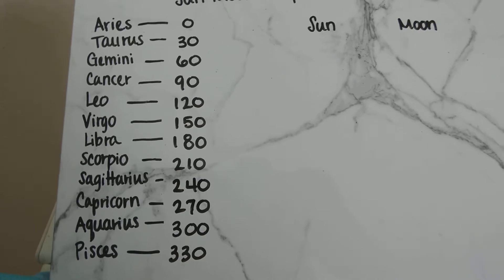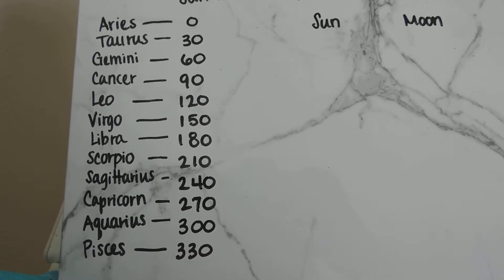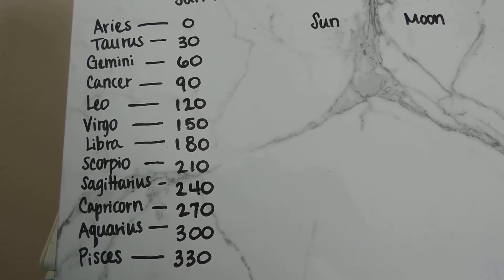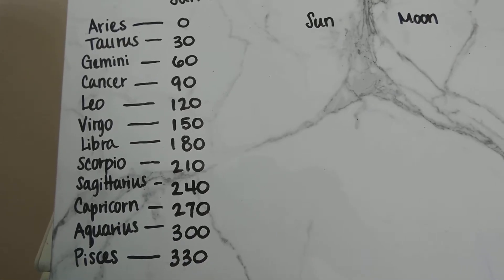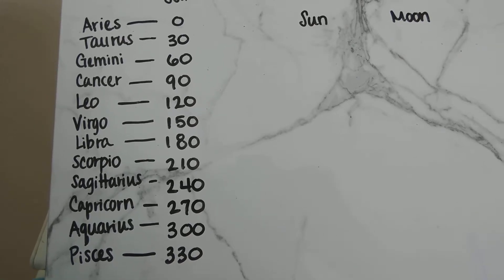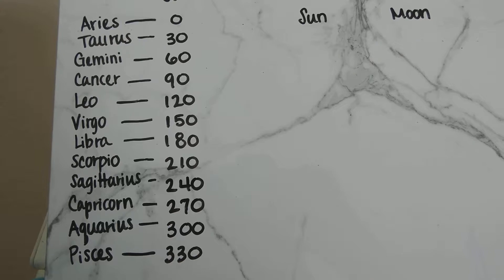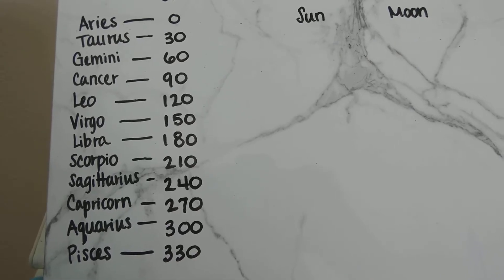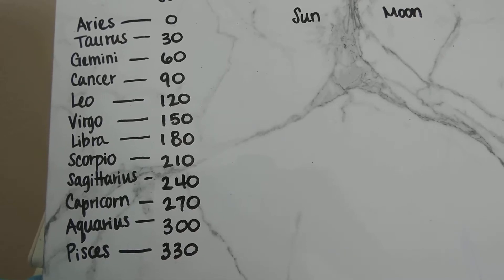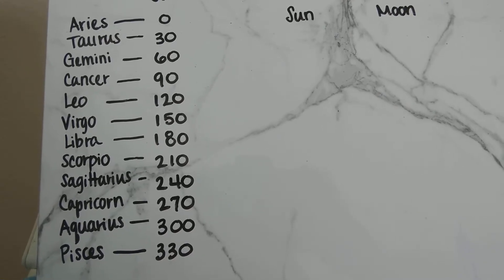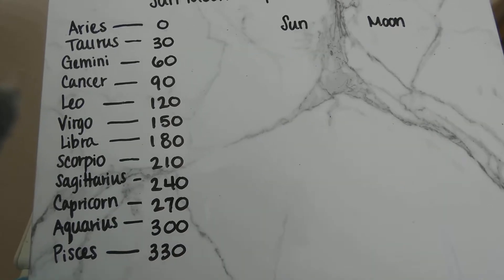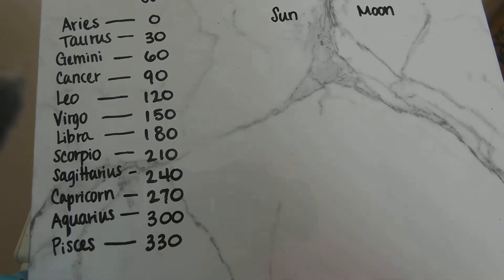First we're going to break the zodiac down into 360 degrees. We'll put down Aries, Taurus, Gemini, Cancer, and then the degrees they start with next to it. So Aries would be from zero degrees to 29 degrees, Taurus would be 30 degrees to 59 degrees, and so on and so forth. Go ahead and pause your video here — this table is going to help you a lot as we go through our calculations. Jot this down and when you're ready press play and we will continue.